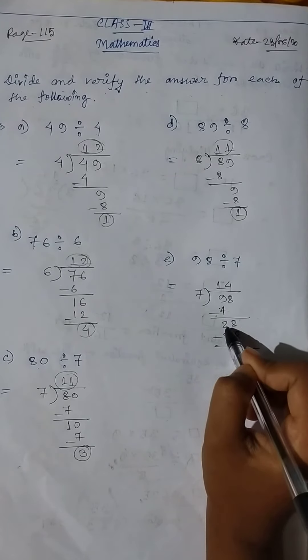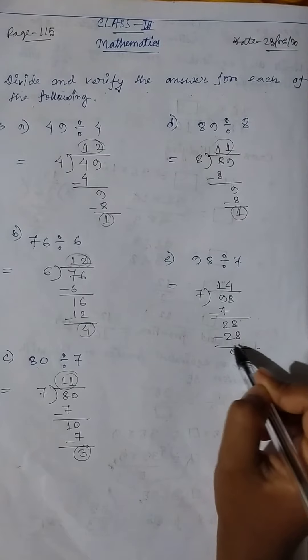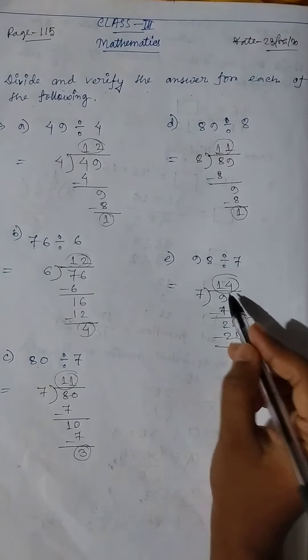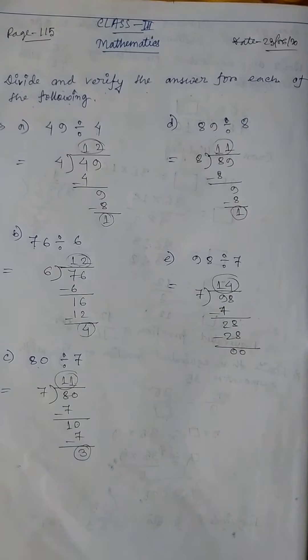8 here, 7 fours are 28, so 0. Quotient 14, remainder 0. Thank you.